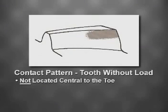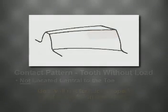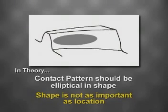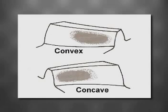But what if the pattern is not correct? Here is an example of a pattern without load that is not located central to the toe. With this pattern, the gear will most likely not function properly and it could fail in operation. In theory, the contact pattern should be elliptical in shape; however, it's important to keep in mind that the shape of the contact pattern is not as important as its location.